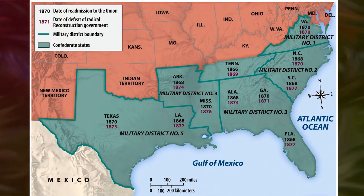Here is a map of the military districts. You can see they combined several states into districts, so states lost their identity for a while while rewriting their constitutions, with the army watching over them making sure they did everything they were supposed to do.